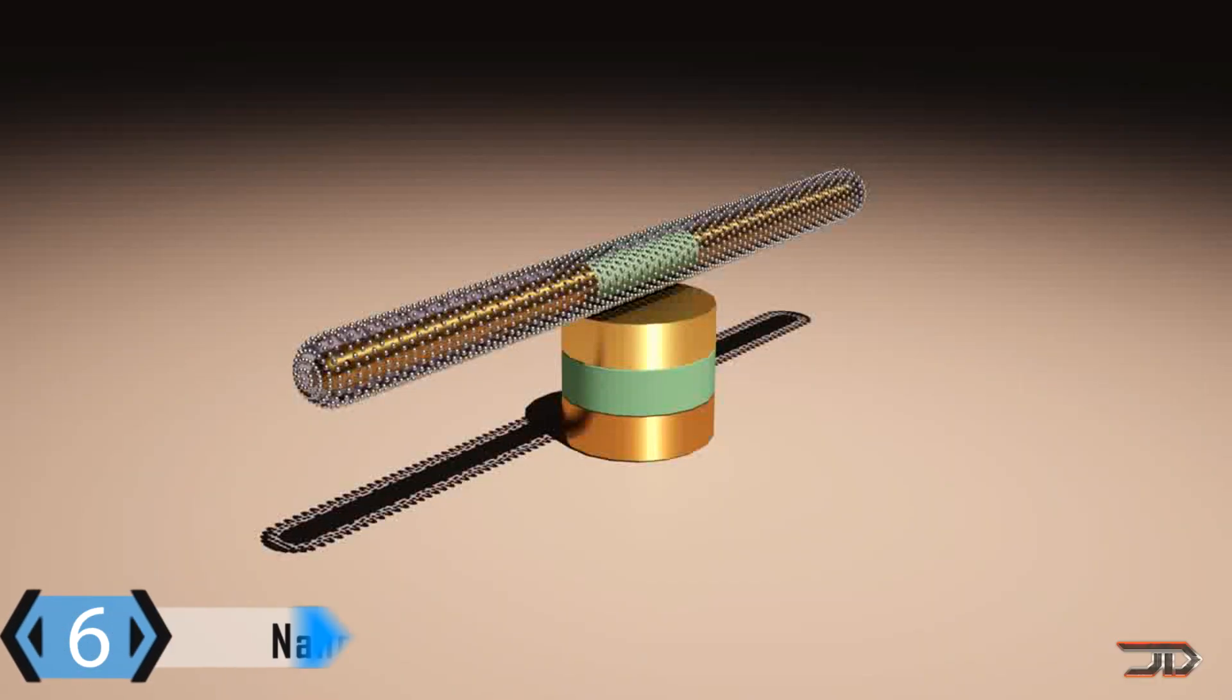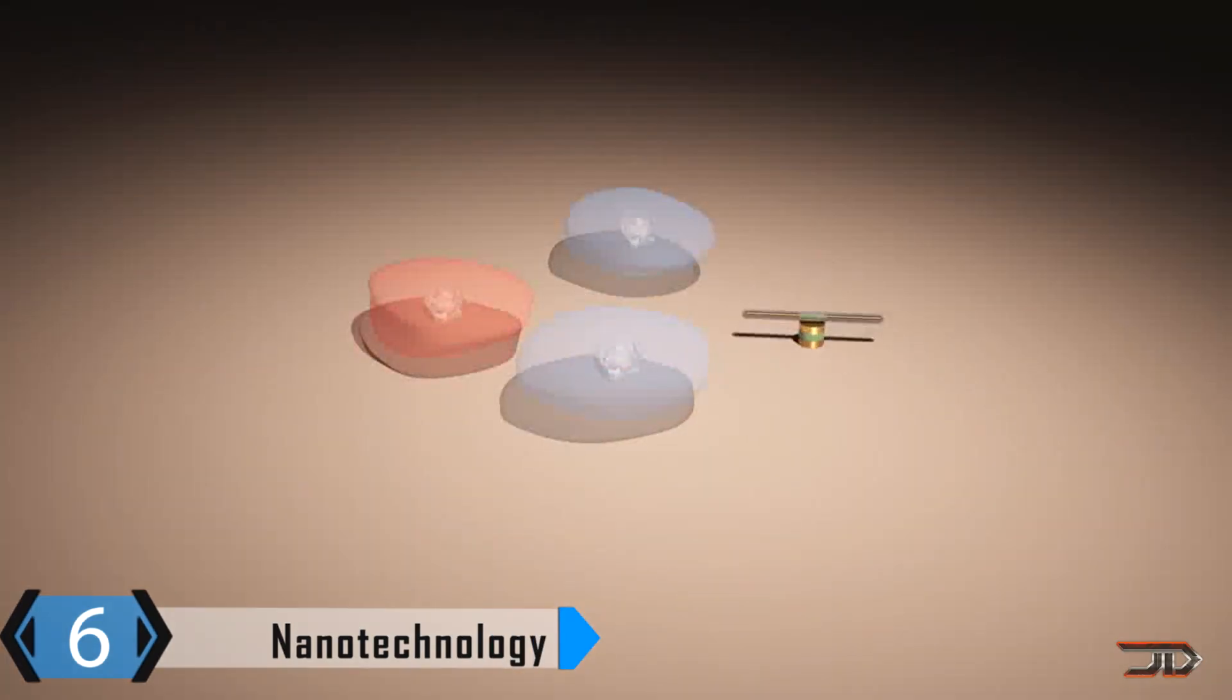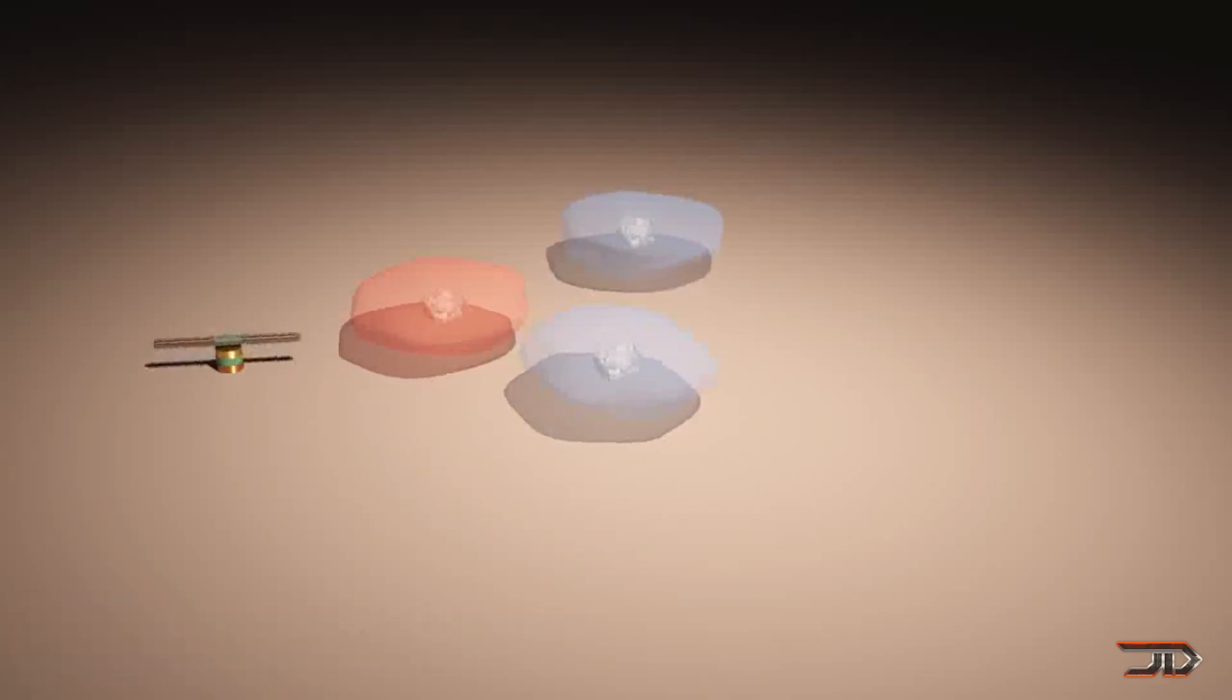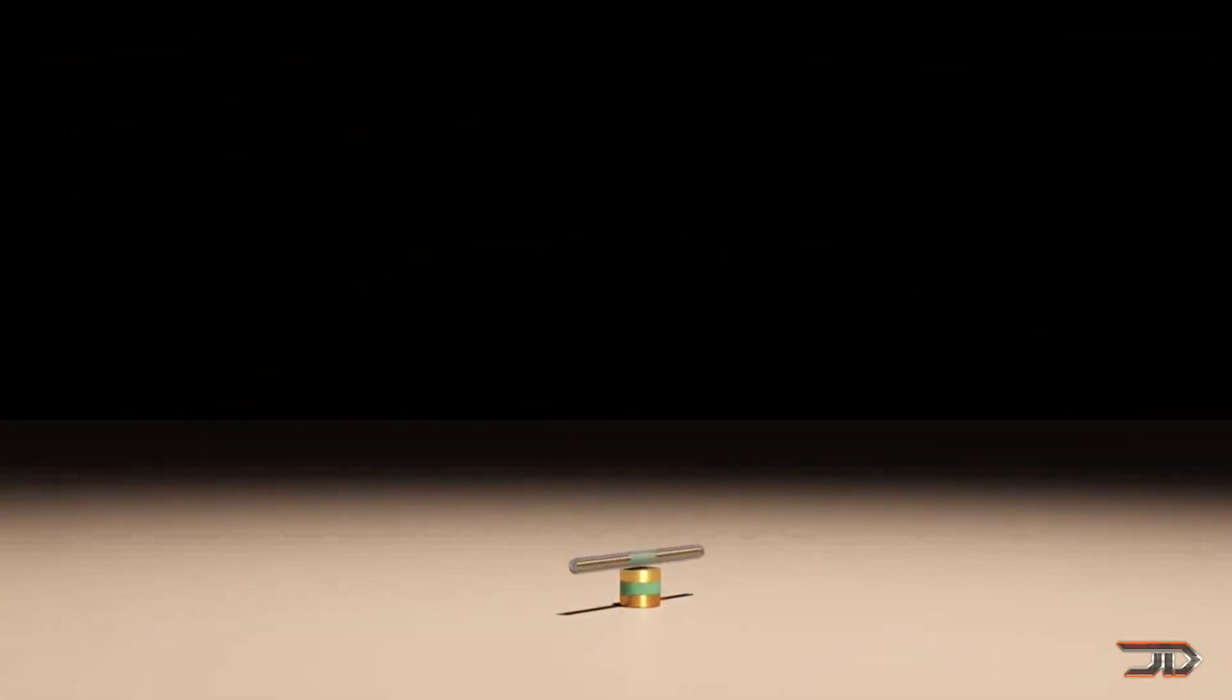At number 6, Nano Machines. We have utilized basic forms of nanotechnology, with self-cleaning materials and sunblock which reflects ultraviolet light, but this technology is still in its infancy phase and we have only begun to discover its potential.